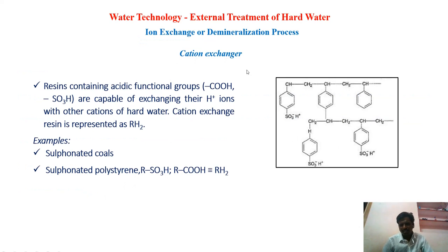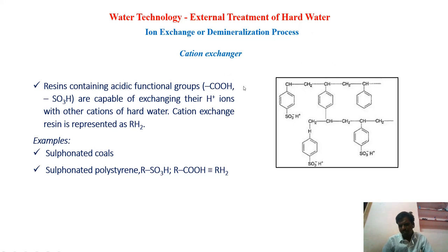The first type is the cation exchanger. These are linear polymers, possibly styrene molecules, with cross links. These molecules have a sulfonic acid group — SO3⁻ H⁺. These functional groups carry positive H⁺ ions, which can be replaced with calcium and magnesium ions present in the water. When you pour that water, calcium and magnesium ions replace the H⁺ ions, forming SO3⁻ Ca²⁺ or SO3⁻ Mg²⁺ on the resin. Sometimes the functional group may be a carboxylic acid group — COO⁻ H⁺ — where H⁺ is also replaced by Ca²⁺ from the water.